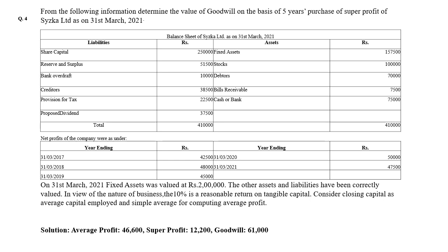All other assets and liabilities have been correctly valued, so they remain at book value as given. The normal rate of return on tangible capital is 10%. We are to consider closing capital as average capital employed, and use the simple average method for computing average profit. This is explicitly stated in the problem, so we follow it accordingly.